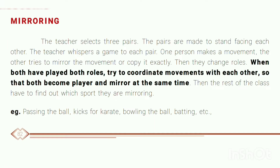The teacher selects 3 pairs. The pairs are made to stand facing each other. The teacher whispers a game to each pair. One person makes a movement, and the other tries to mirror the movement — or copy it exactly. Then they change roles.